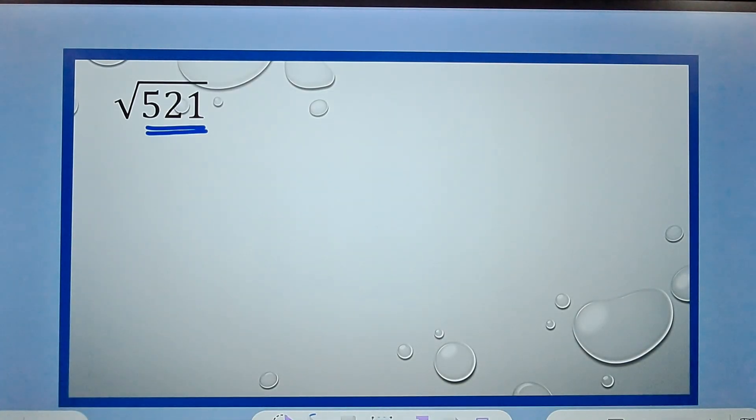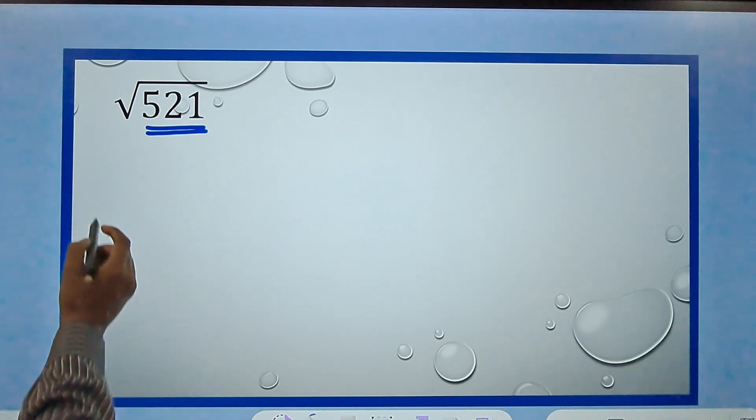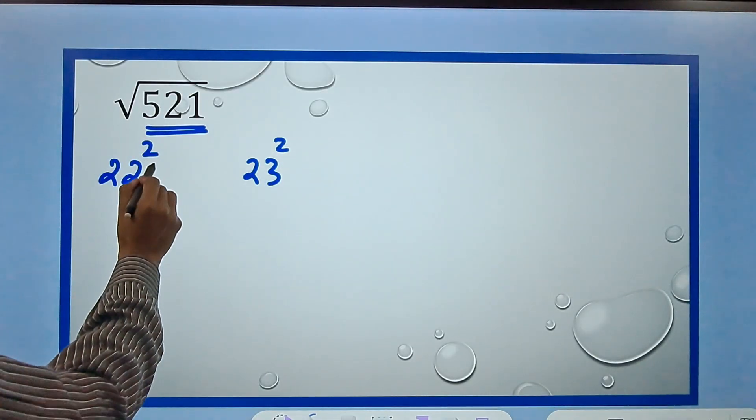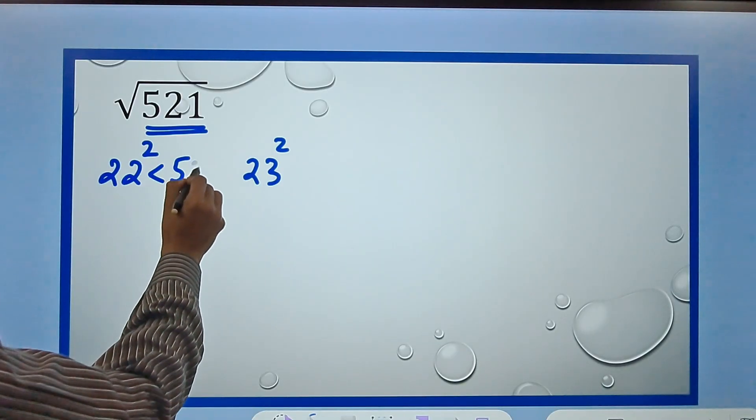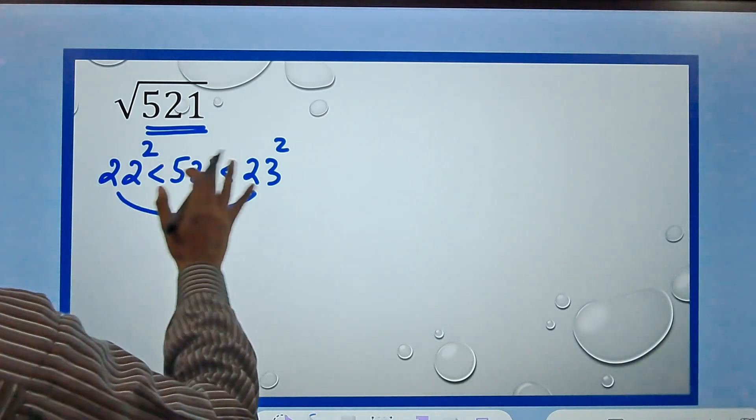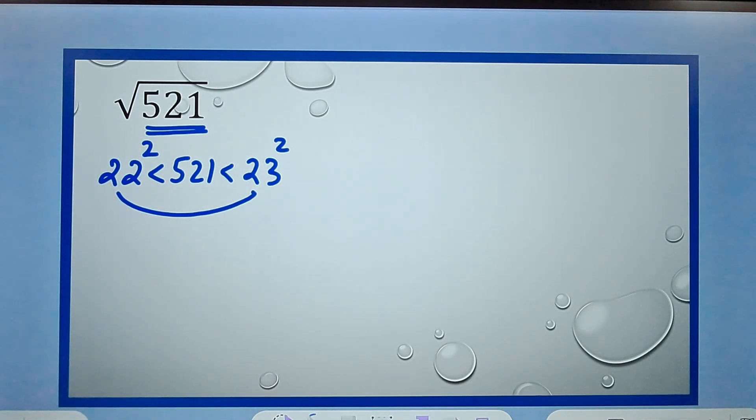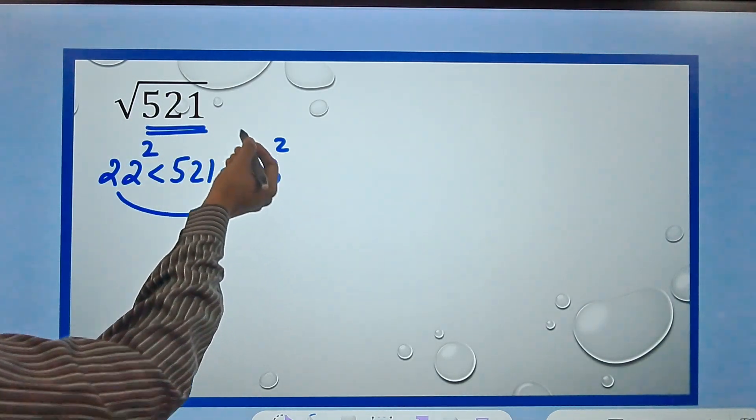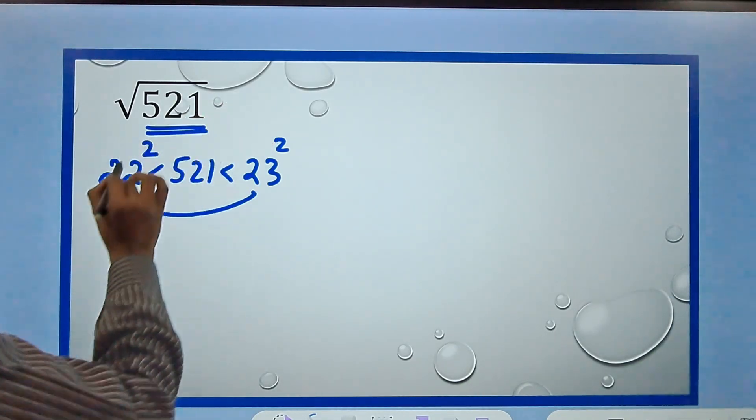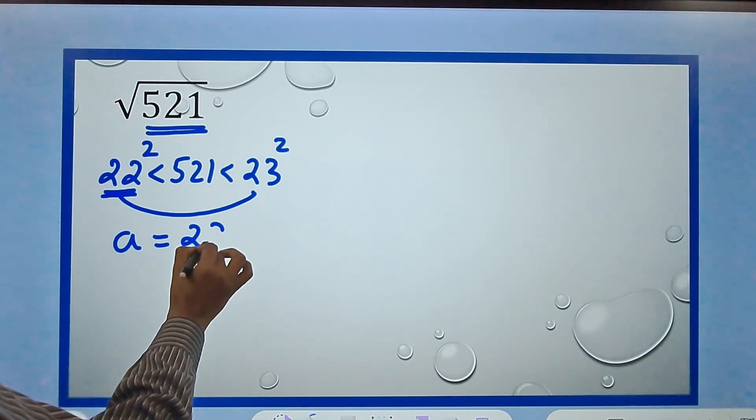521, if you observe carefully, this number is between 22 square which is 484 and 23 square which is 529. So 22² < 521 < 23². My answer for this is going to be between 22 and 23. This is something you need to be very quick in judging. So my answer is 22 point something. Now what is the answer after decimal? That's where the problem is. This number, my square root starts with 22, so I will assume a as 22 and b as the number in the square root, that is 521.